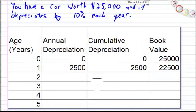So an example might be you have a car that's worth $25,000 and it depreciates by 10% each year, and you're asked to fill out a depreciation table.